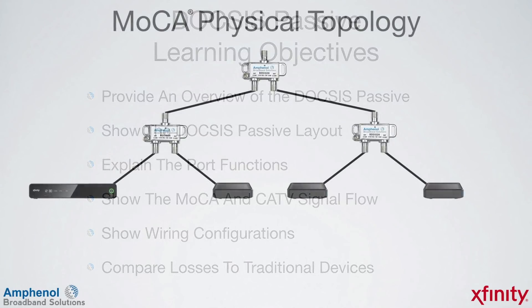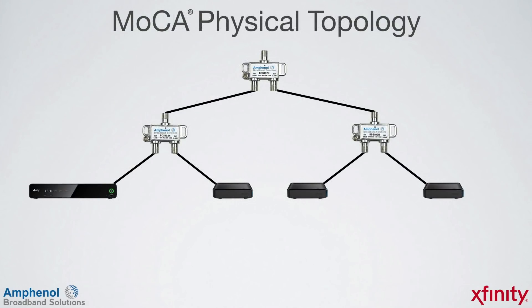First, we'll look at the MOCA physical topology to understand the challenges of the MOCA signal. Physically, it looks the same as a traditional cable topology — in this example, a two-way splitter with each output port feeding another two-way splitter, which is equal to a four-way splitter. The MOCA devices are installed similar to the way a standard set-top box is installed.